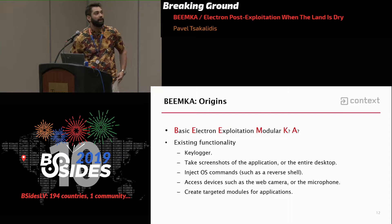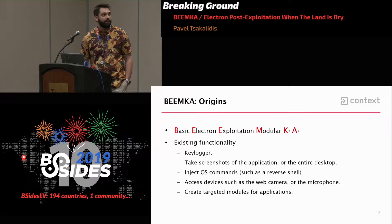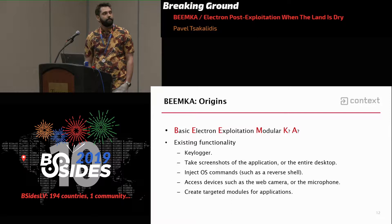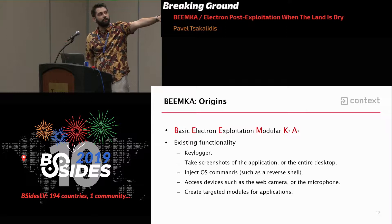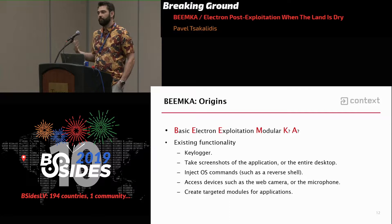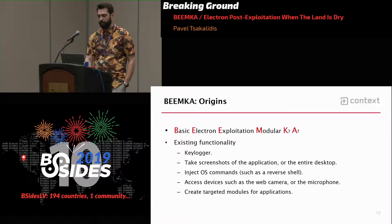On the right-hand side we have the victim, on the left we have the listener the attacker has set up. Let's assume the application is backdoored. When the user logs in, we see on the left that we get a reverse shell back. This runs Ubuntu, and we can see that Skype runs without any sort of warnings, however we get a shell back. This works across all operating systems as long as the application is built with Electron.